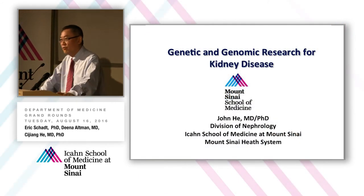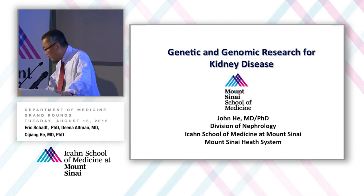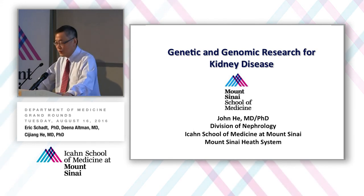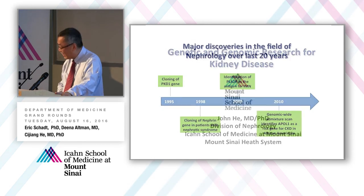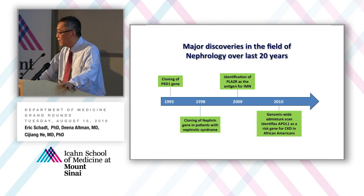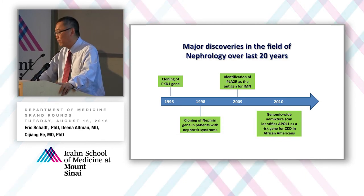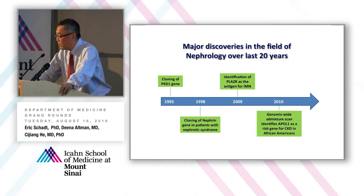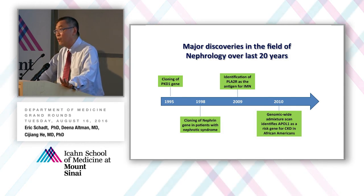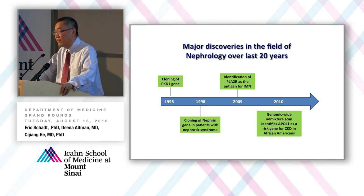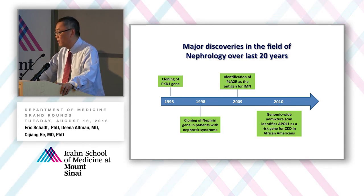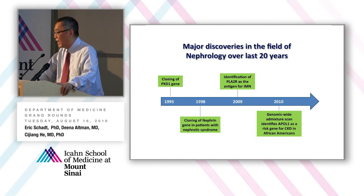Thanks for the invitation. Now we try to move from bacteria to humans. Over the next 15 minutes, I'm going to summarize the genetic study in kidney disease, which is just impossible in 15 minutes. What are the major discoveries over the last 20 years in nephrology? I think the cloning of PKD1 genes in 1995 is very important, and the cloning of the nephrin gene, which really opened all the area of podocyte research. And the recent identification of phospholipase A2 receptor as an antigen for membranous nephropathy, as well as the identification of APOL1 gene as a risk gene for CKD in African-Americans — which is really important for us.